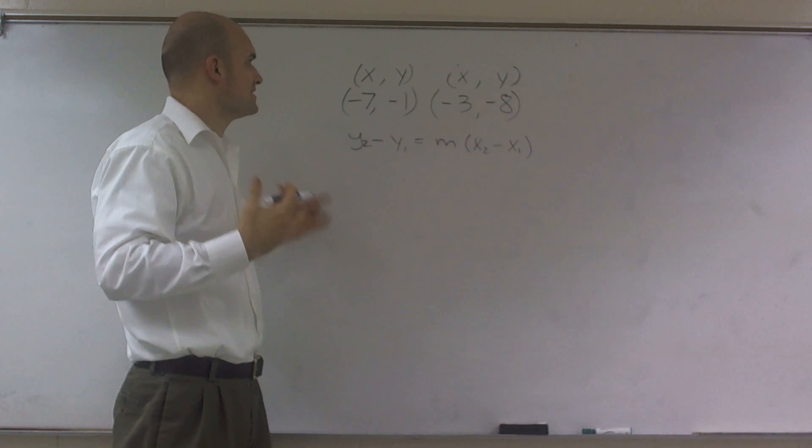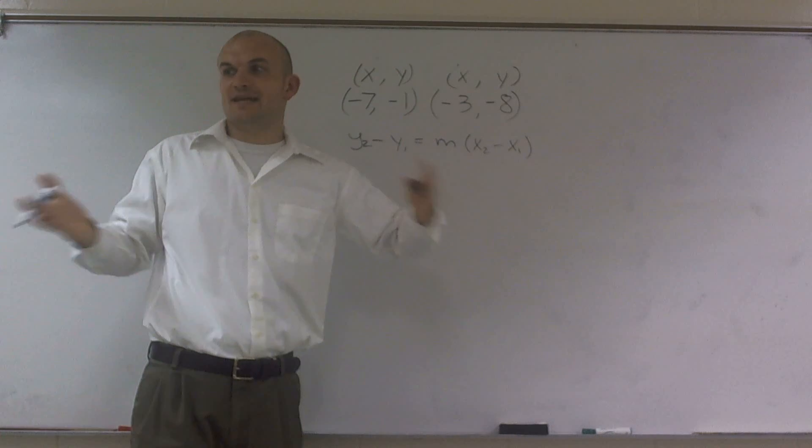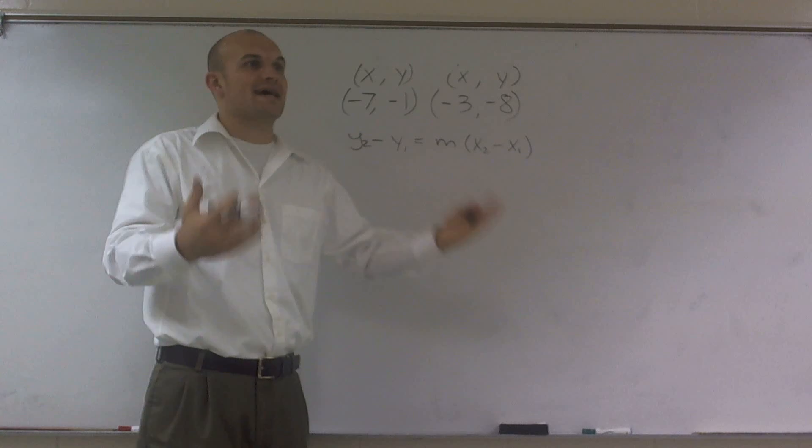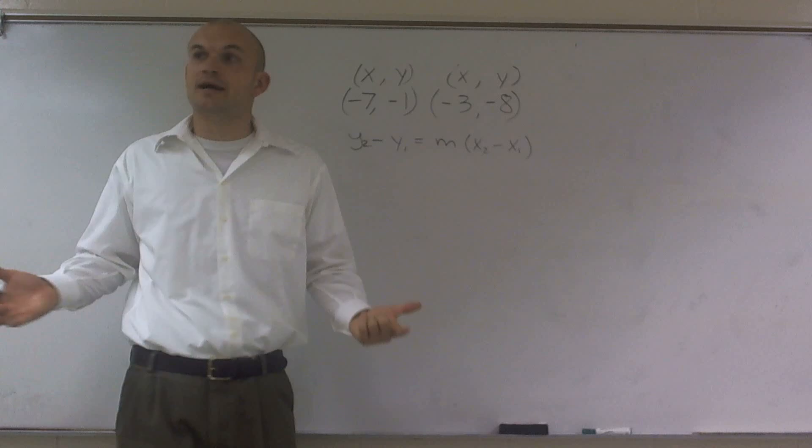Well, we need some way to differentiate between our x values. We have an x and we have another x. So I want to distinguish between the two of them. When I say what is x, some people might say it's negative 7, some people might say it's negative 3. And they're both right, right?